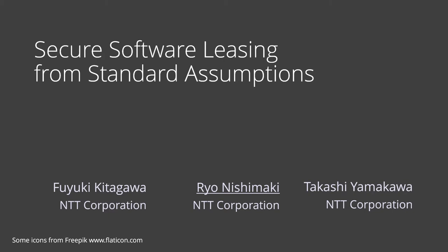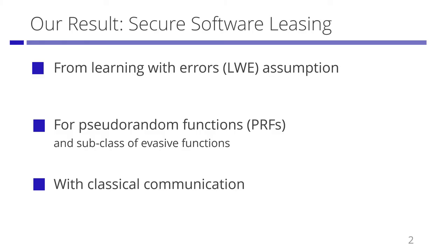Welcome to my talk. I'm going to talk about Secure Software Leasing. This is joint work with Fuyuki Kitagawa and Takashi Yamakawa from NTT. In this work, we achieve Secure Software Leasing schemes for pseudorandom functions and a subclass of evasive functions from the learning with errors assumption. As an additional feature, we can extend our scheme to Secure Software Leasing with classical communication.